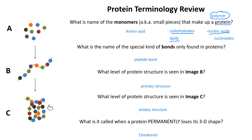We had a great debate about what kind of structure we see in image C. We landed on tertiary structure. When we talk about tertiary structure, what does it mean? Tertiary structure means the 3D shape of a protein.